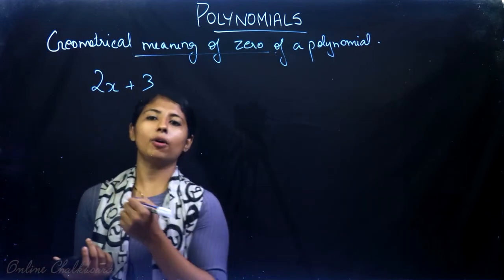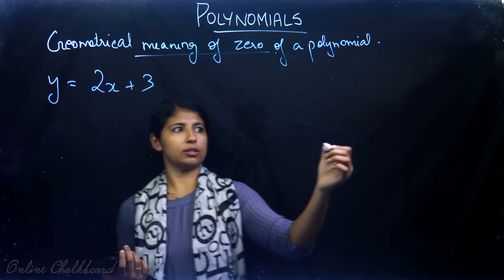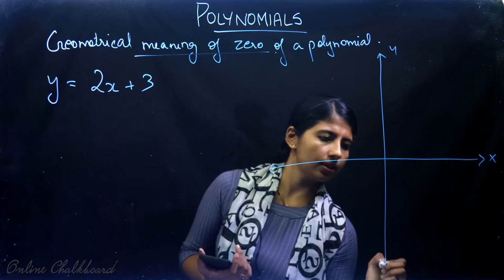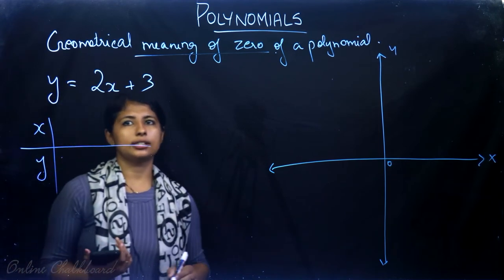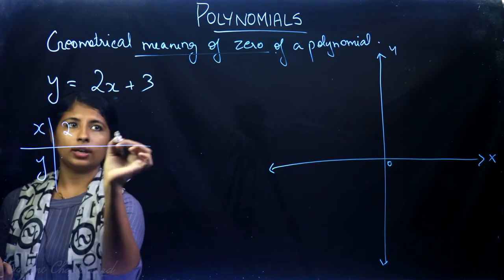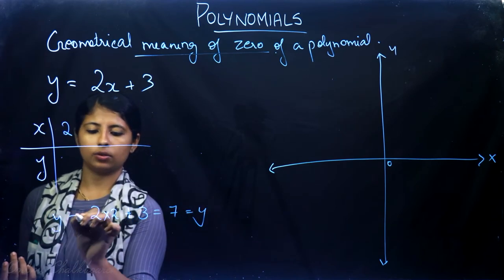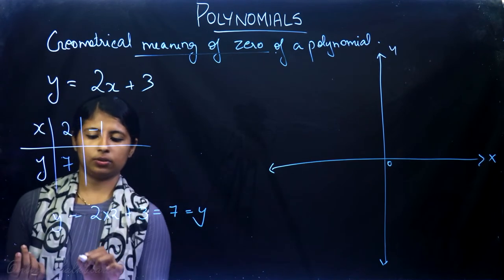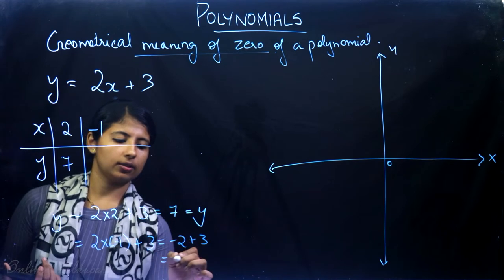Let's take y = 2x + 3 and represent it on a graph. We set up coordinate axes with x-axis and y-axis. For x = 2: y = 2(2) + 3 = 7, giving point (2, 7). For x = −1: y = 2(−1) + 3 = 1, giving point (−1, 1). We can draw a straight line through these two points.